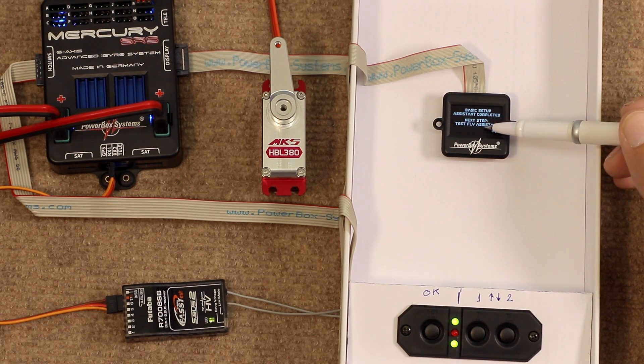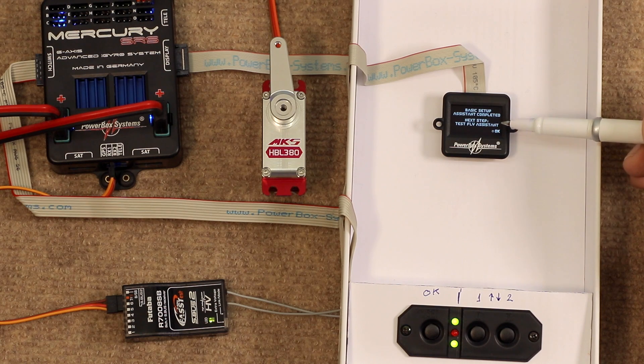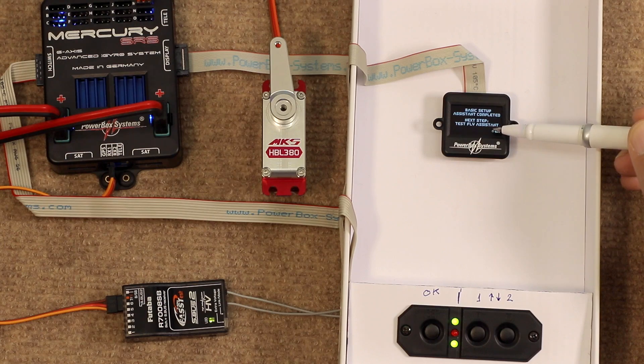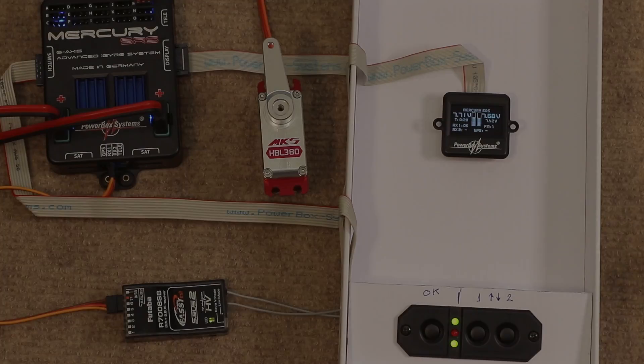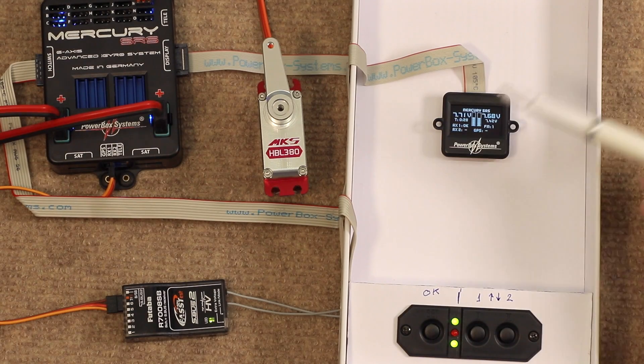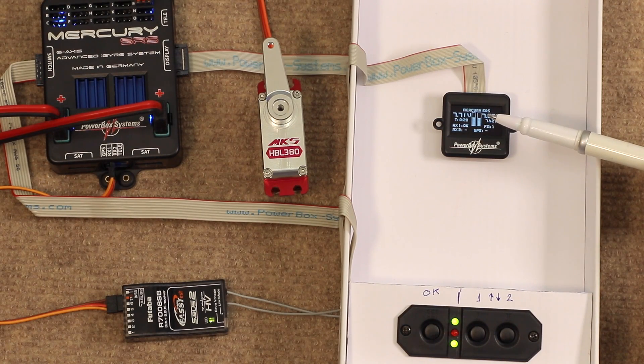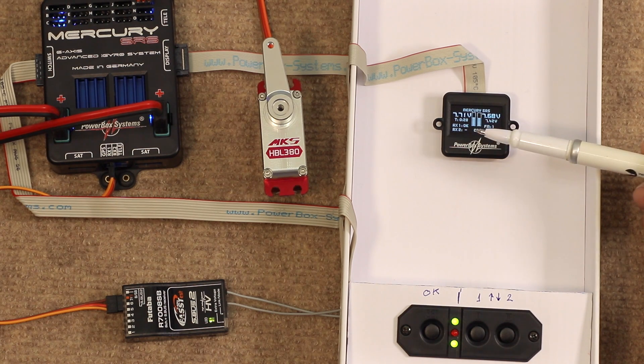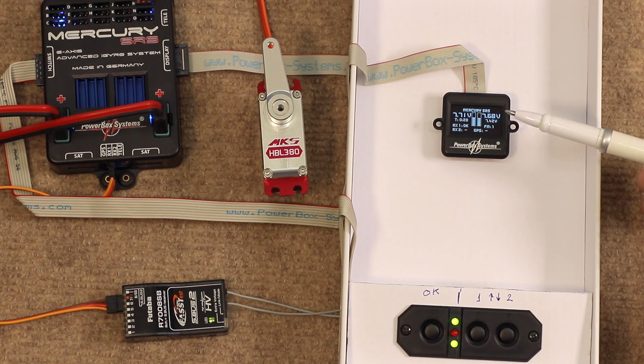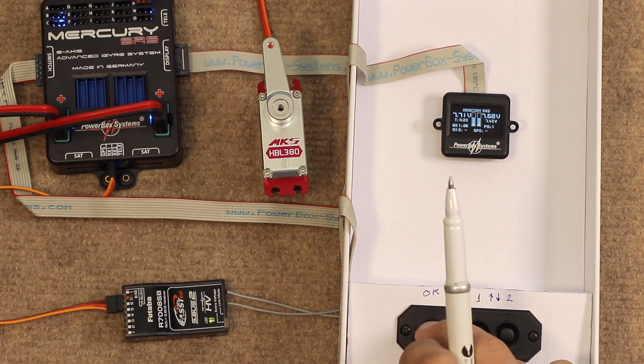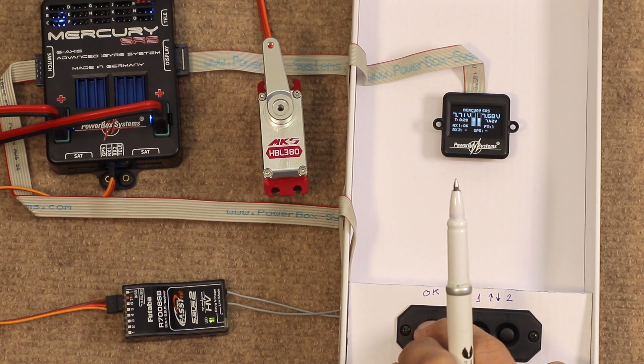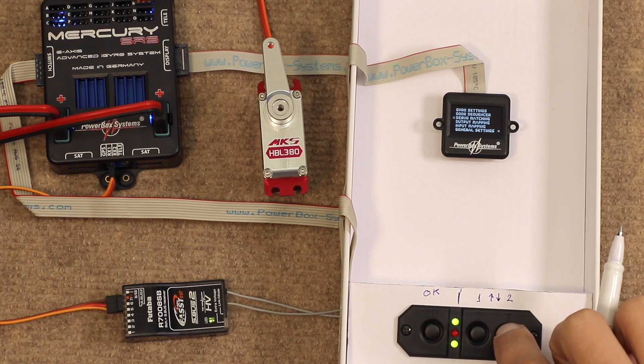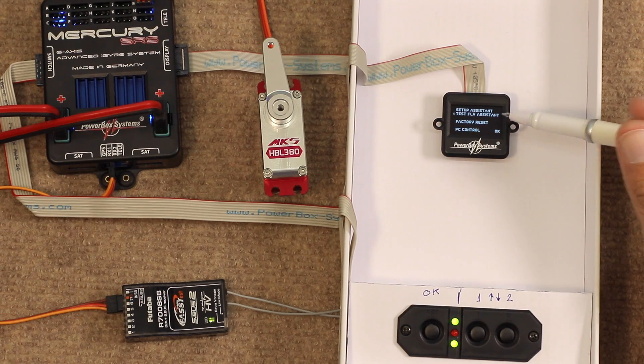The test fly assistant being exactly what it says on the tin, the assistant that you will use to set up the gyro in flight. Okay, so we've seen how to set up the gyro using the wizard. It's now time to take our plane to the flying field and actually put it in the air and do some real tests with some real gyro. Okay, so we go into the menu. We're going to skip all the first page and go to test fly assistant.